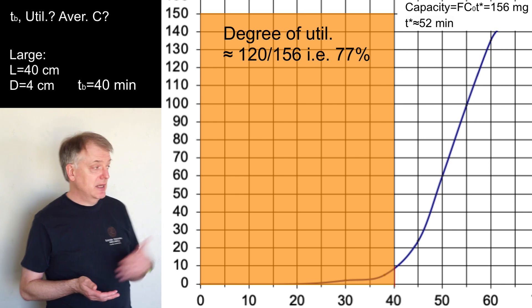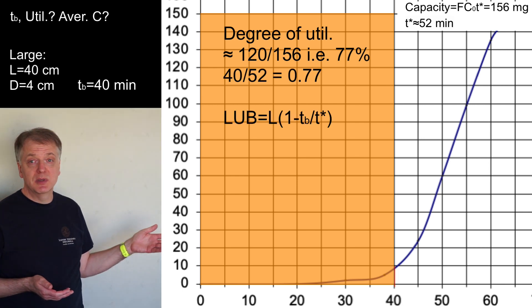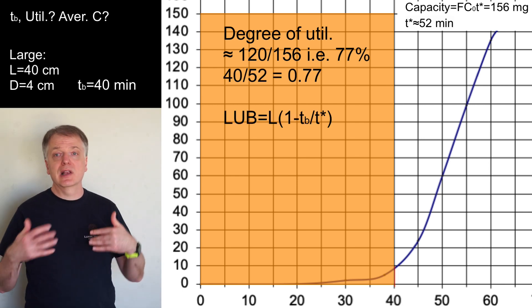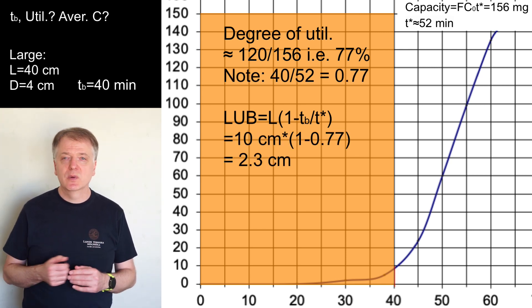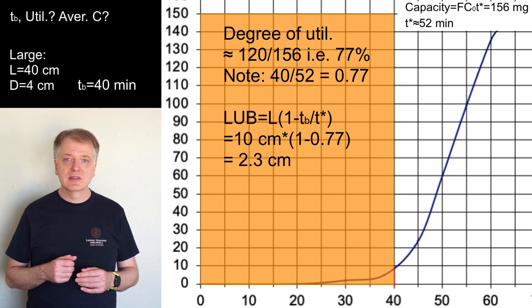And a length of unused bed as LUB equals 1 minus TB divided by T star times the length. That is 1 minus 40 divided by 52 times 10 which gives us 2.3 centimeters.